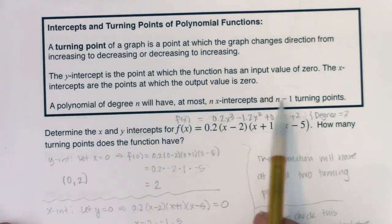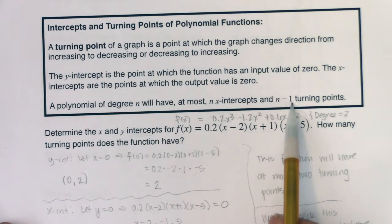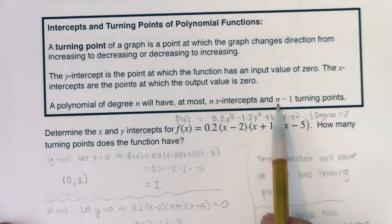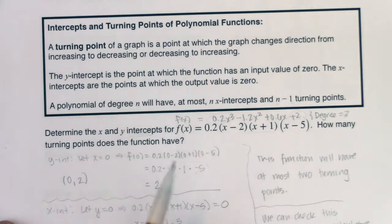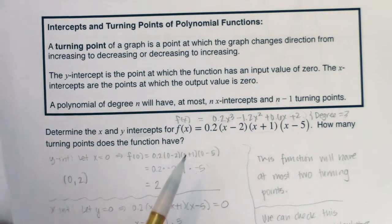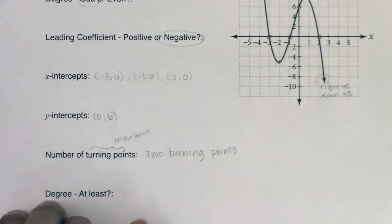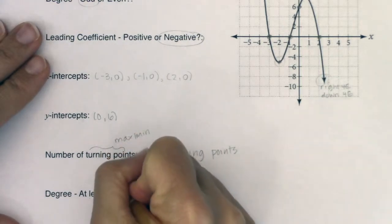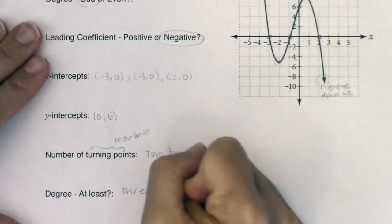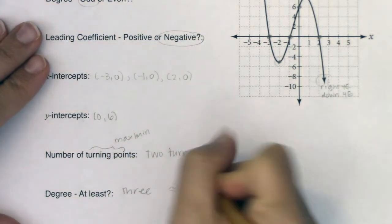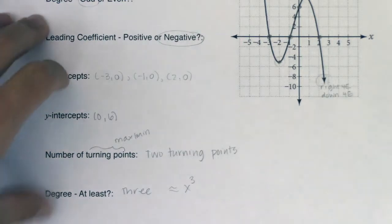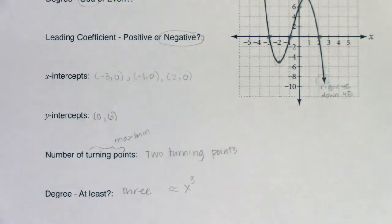So if you have two turning points, if n minus one is equal to two, then n must have been three. So you have a polynomial of degree at least three. It could be more than that, but it's at least three as we're moving through this. So I know I'm dealing with at least x cubed. It could be x to the fifth, x to the seventh, but it's at least three. So that's what we're working with here.